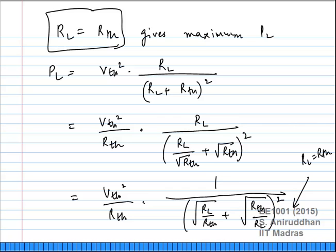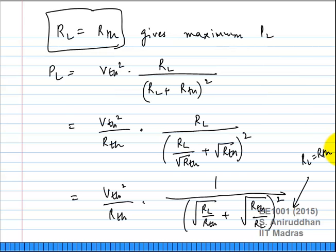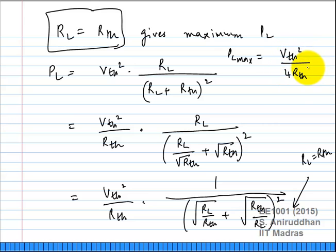In that case, every bit of power counts. The maximum power you can get once you match is when R_L equals R_th, and the maximum power P_L max equals V_th squared divided by 4 R_th. This is the maximum power you can actually receive from this particular network.